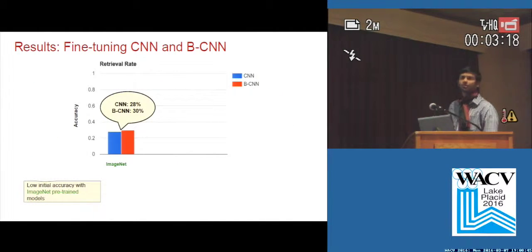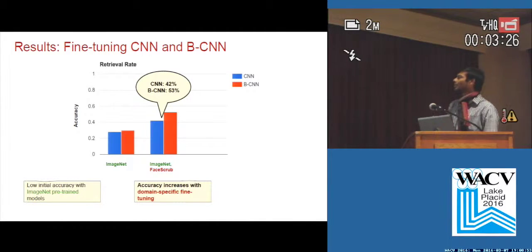We start with the VGG-M model, which is just the ImageNet pre-trained models. We get pretty low accuracies initially. We fine-tune it on a moderately sized dataset called FaceScrub. It's got around 900,000 images. It's better.